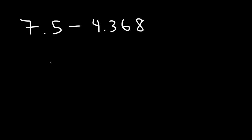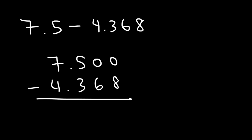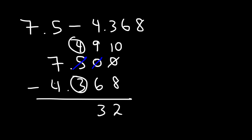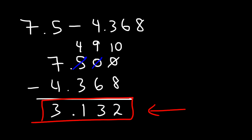Now let's try a harder example: 7.5 minus 4.368. All we need to do is add zeros to get 7.500. Borrow a 1 from the first 0, making it 9, which requires borrowing from the 5, making it 4, and the second 0 becomes 10. So 10 minus 8 is 2, then 9 minus 6 is 3, then 4 minus 3 is 1, and finally 7 minus 4 is 3. The answer is 3.132.